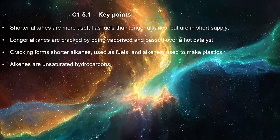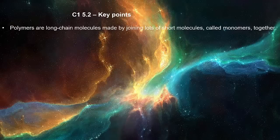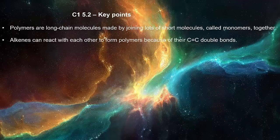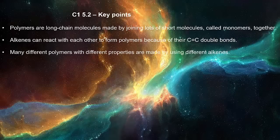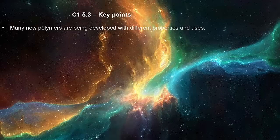Alkenes are unsaturated hydrocarbons. Polymers are the long chain molecules made by joining lots of short molecules called monomers together. Alkenes can react with each other to form polymers because of their double carbon bonds. Many different polymers with different properties are made by using different alkenes. Many new polymers are being developed with different properties and uses.